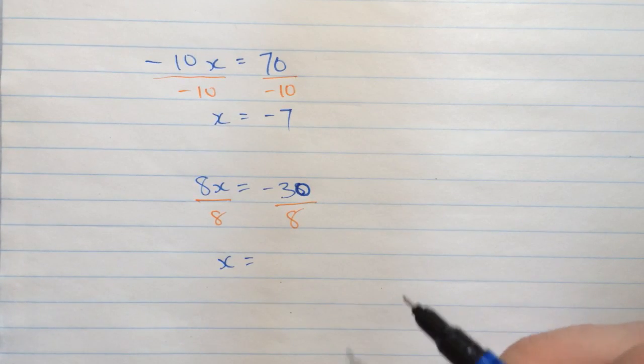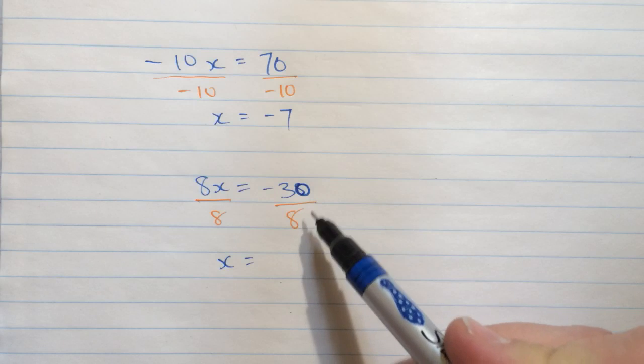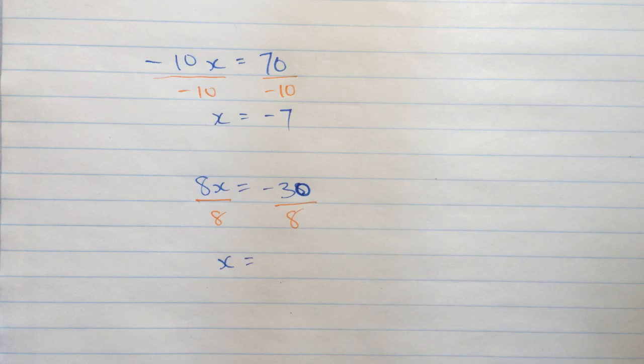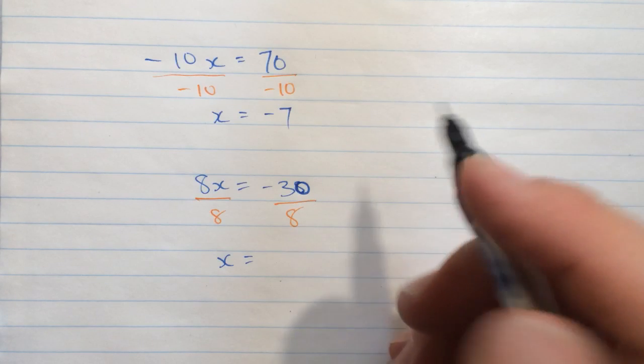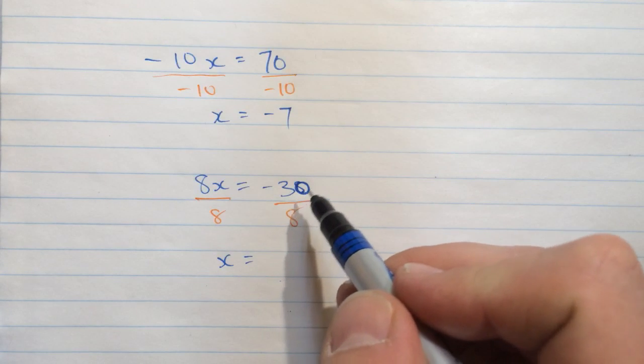Here I'll have x on this side when I simplify. On this side, 30 divided by 8. Well, that's not a whole number. That's going to give us a fraction or a decimal, if you like. I'm going to leave this as a fraction.